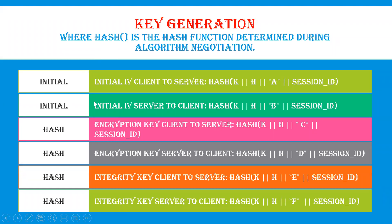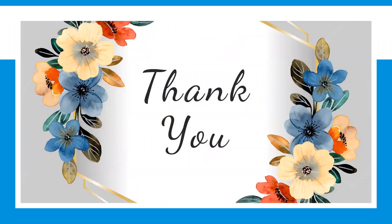In key generation, there are many keys generated. From client to server, you have a session ID generated; B is the other client generating a session ID. The encryption key client-to-server and encryption key server are set up. Integrity of the key must be maintained on both sides. Each key generation is followed with a hash algorithm, each having different random numbers generated — where hash is the hash algorithm which determines algorithm negotiation. In upcoming videos we will be seeing about the connection protocol. Please stay tuned for more information. Thank you.